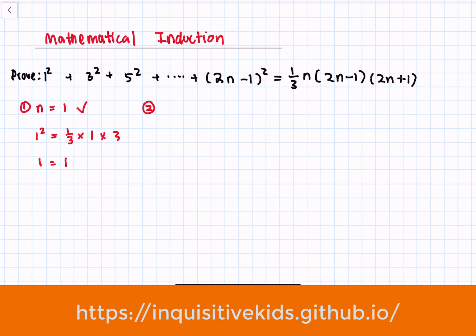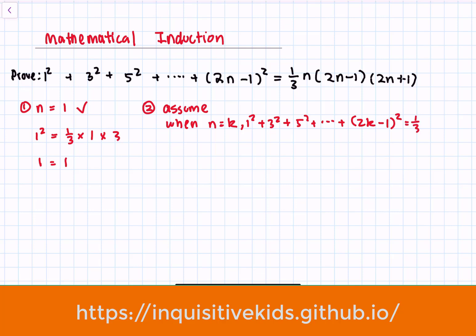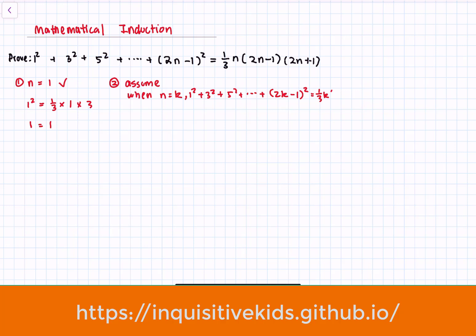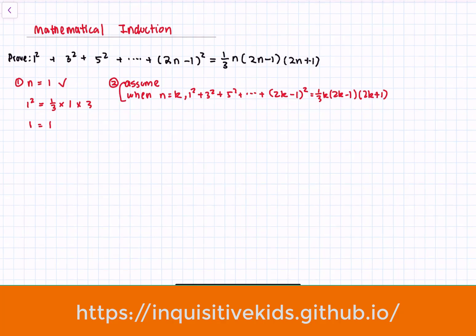If we know that n equals 1 is true, then we have to assume that when n is equal to any integer — so when n is equal to k — this formula, 1 squared plus 3 squared plus 5 squared, all the way added up to the kth term 2k minus 1 squared, is equal to one-third k times 2k minus 1 times 2k plus 1. We're going to assume that when n is equal to k, this formula is true.